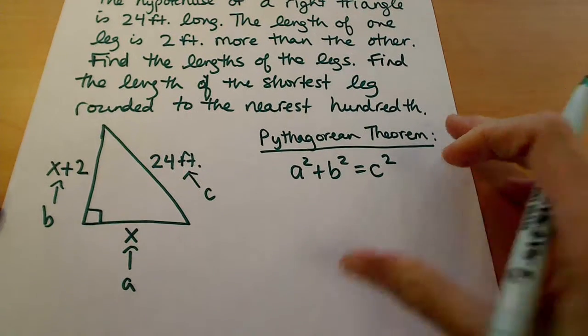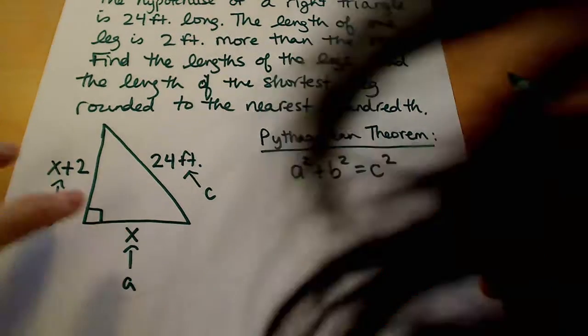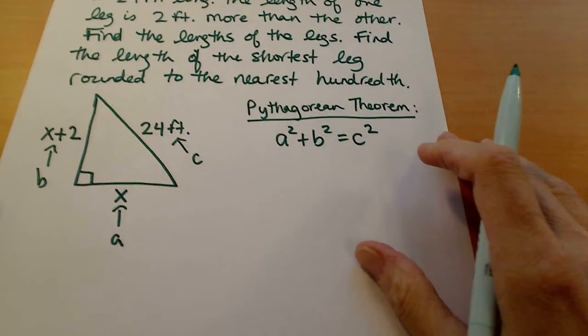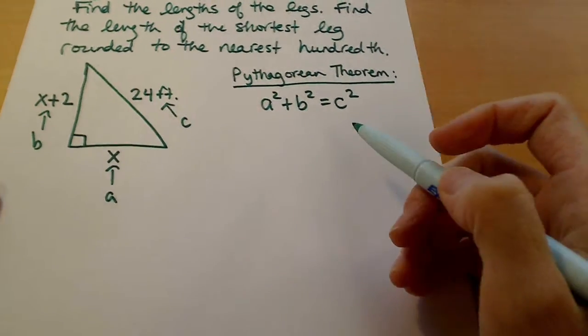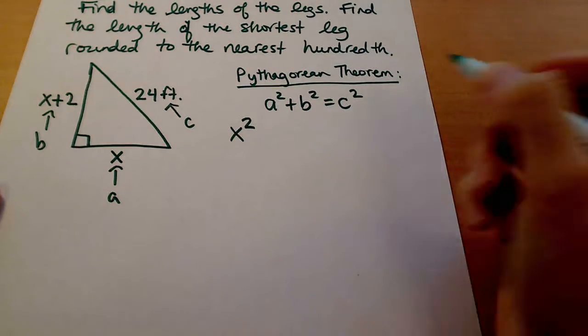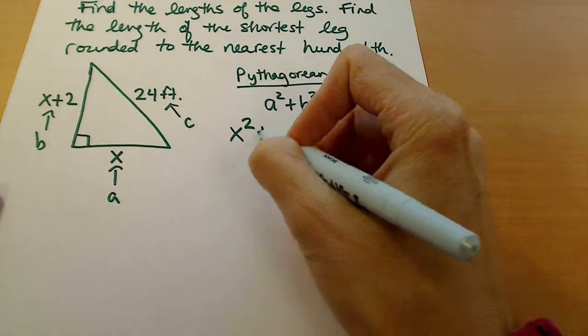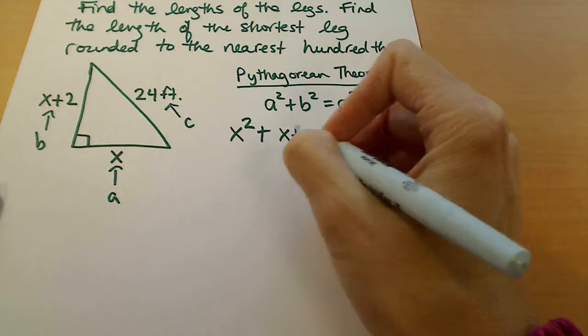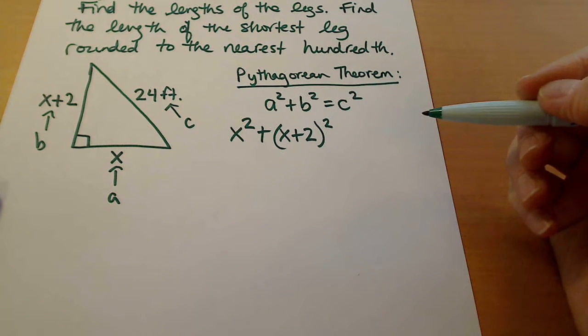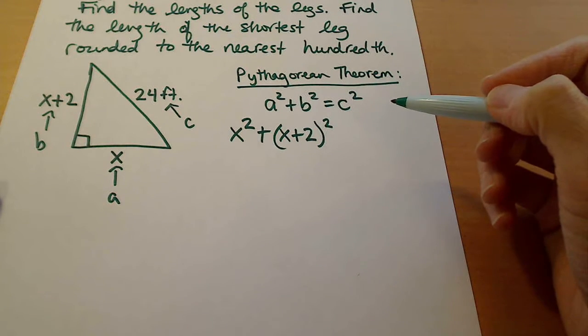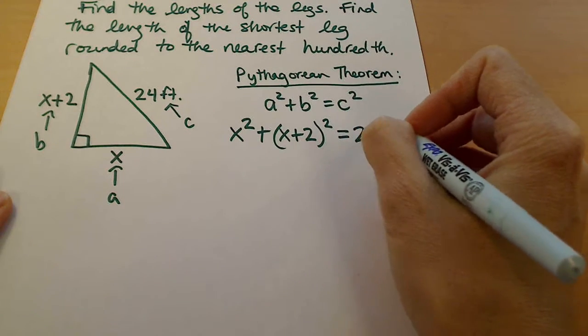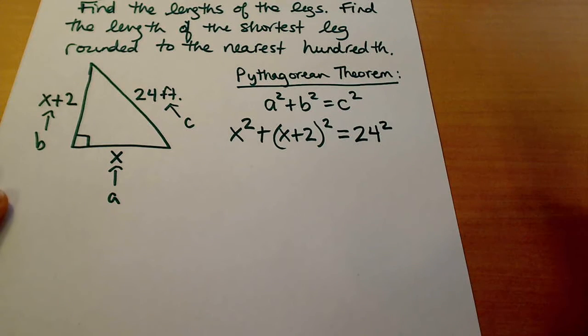What we want to do is plug in each of these values that we have into our equation and then solve. I'm going to plug in x for the a, so it's x squared. I'm plugging in x plus 2 for the b, and that x plus 2 needs to be put in parentheses because that entire thing is what's being squared. Then on the other side the c is 24, so that's going to be 24 squared.